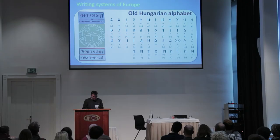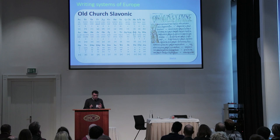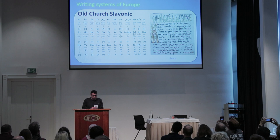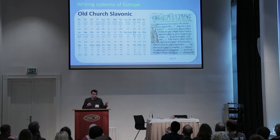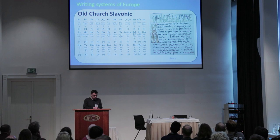This next script is not used regularly, but it is used in the Russian Orthodox Church. It developed from an old version of the Cyrillic alphabet in the 10th century, and it's used to write Church Slavonic, which is the liturgical language of the Russian Orthodox Church. It's basically a variation of the Cyrillic alphabet with some extra letters no longer used in modern Cyrillic.